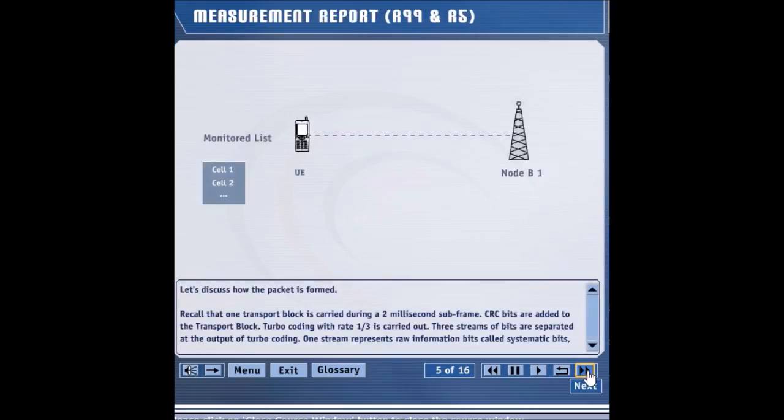The UE monitors the strength of the neighboring pilots. It reports the pilots' strengths periodically if instructed in the measurement control message. For event-based reporting, the most important event is 1D, which is the change of best cell. As soon as the strongest cell changes, the UE reports the measurements to the RAN, so that the RAN can make arrangements to send data from the new strongest cell rather than from the old weaker cell.